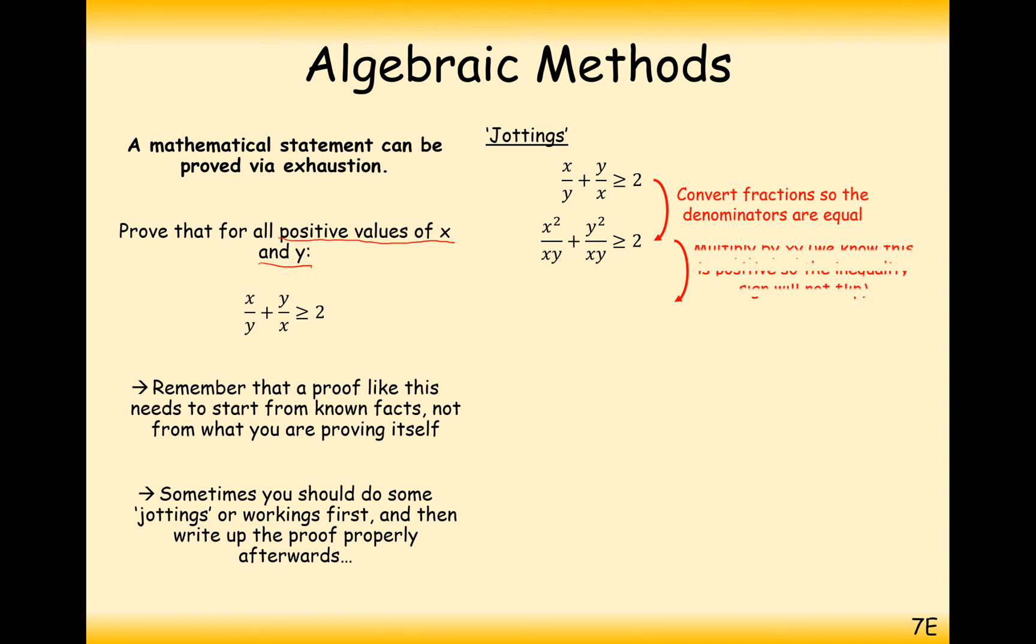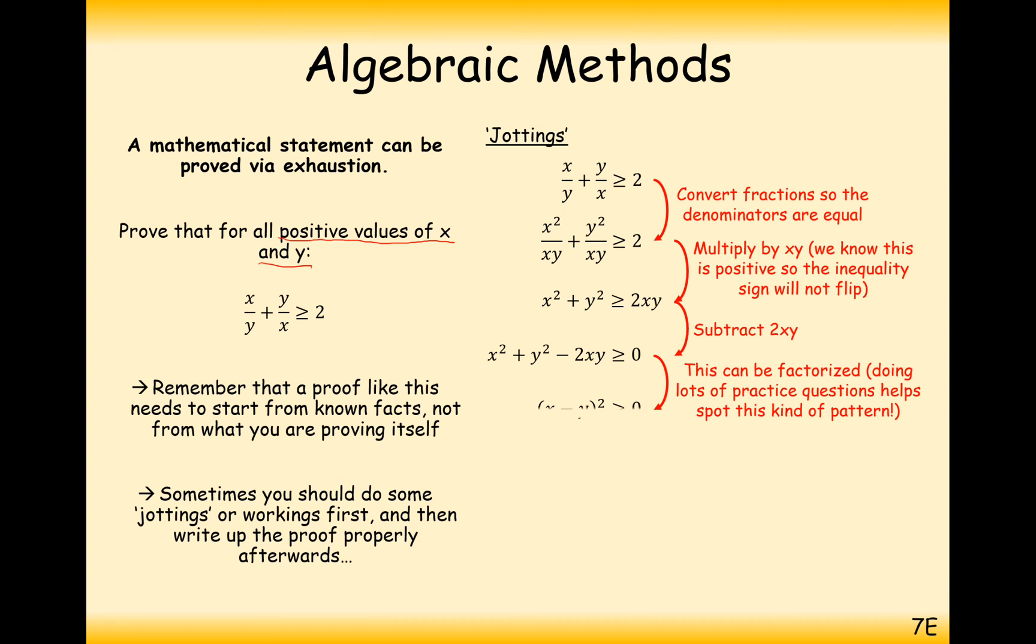We'll add the fractions first by creating common denominators. Multiply by xy. Now xy is going to be positive, so we don't have to worry about our sign here. And take 2xy on to the other side. And we notice here that this can be simplified into x minus y squared is greater than or equal to 0. Now we know that this here is going to be true. Any square number is greater than or equal to 0. So hence, if we work our way back upwards, we can prove this thing here.